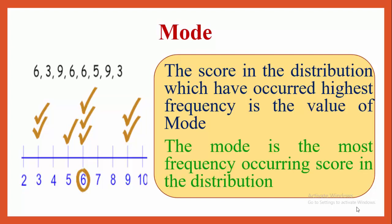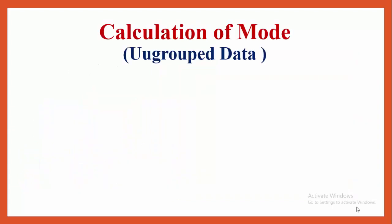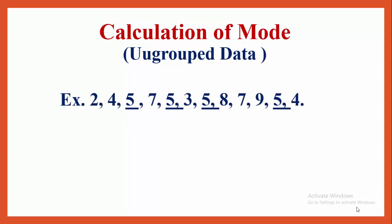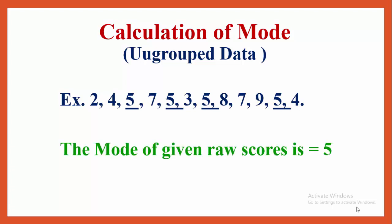The mode is the most frequently occurring score in the distribution. Calculation of mode when ungrouped data or raw scores are given — for example, the raw scores are 2, 4, 5, 7, 5, 3, 5, 8, 7, 9, 5, 4. Mode is equal to 5, because 5 occurs 4 times in this series. So the mode of this given series is equal to 5.